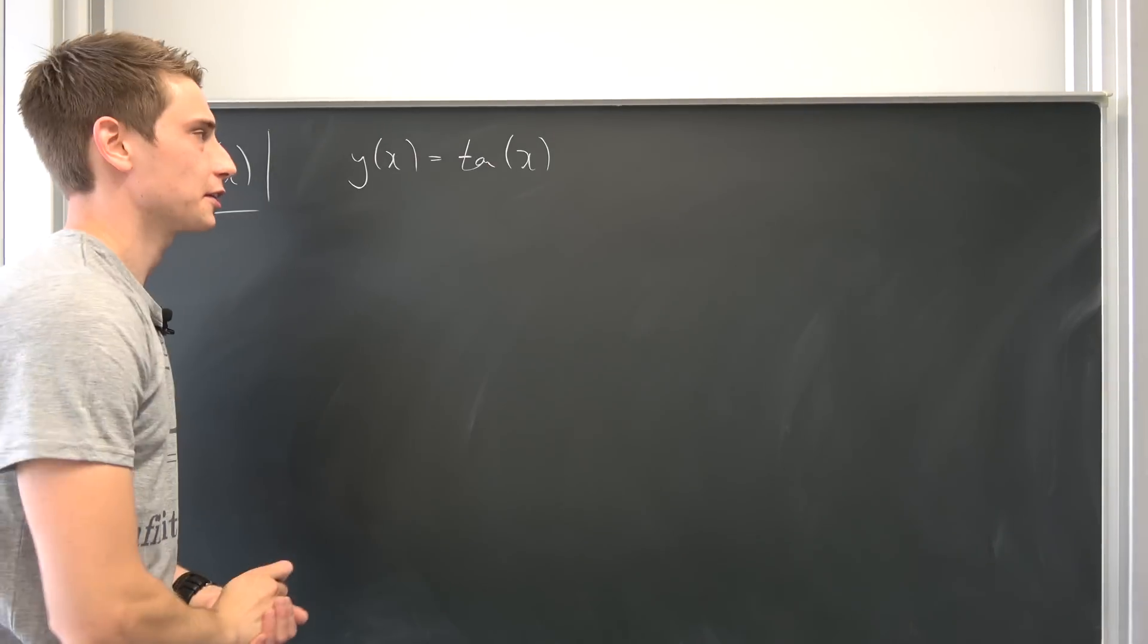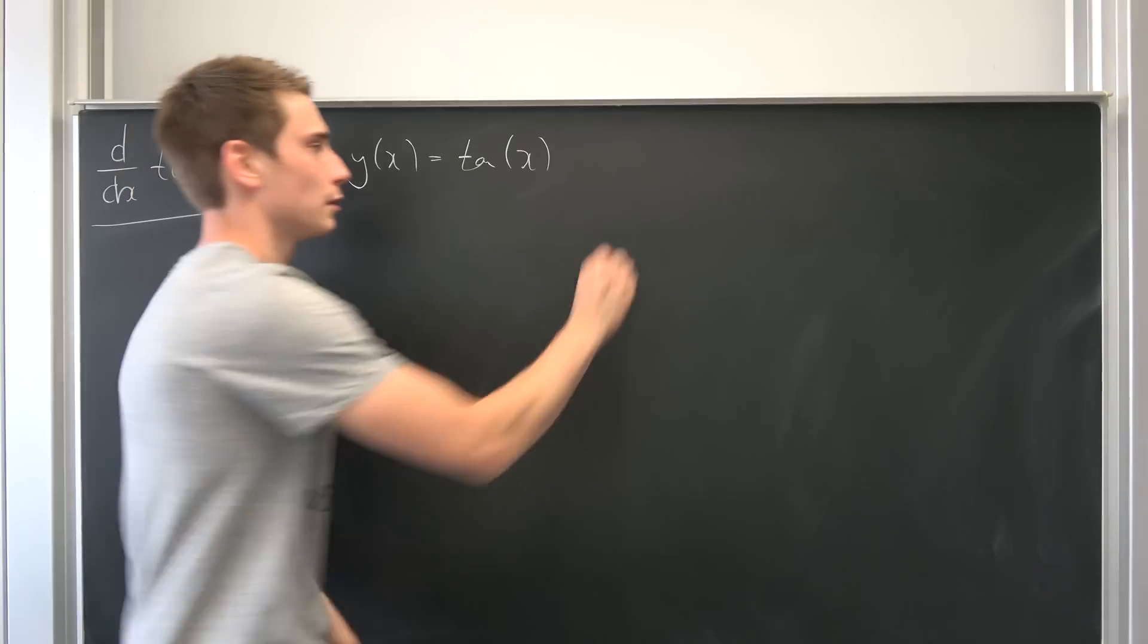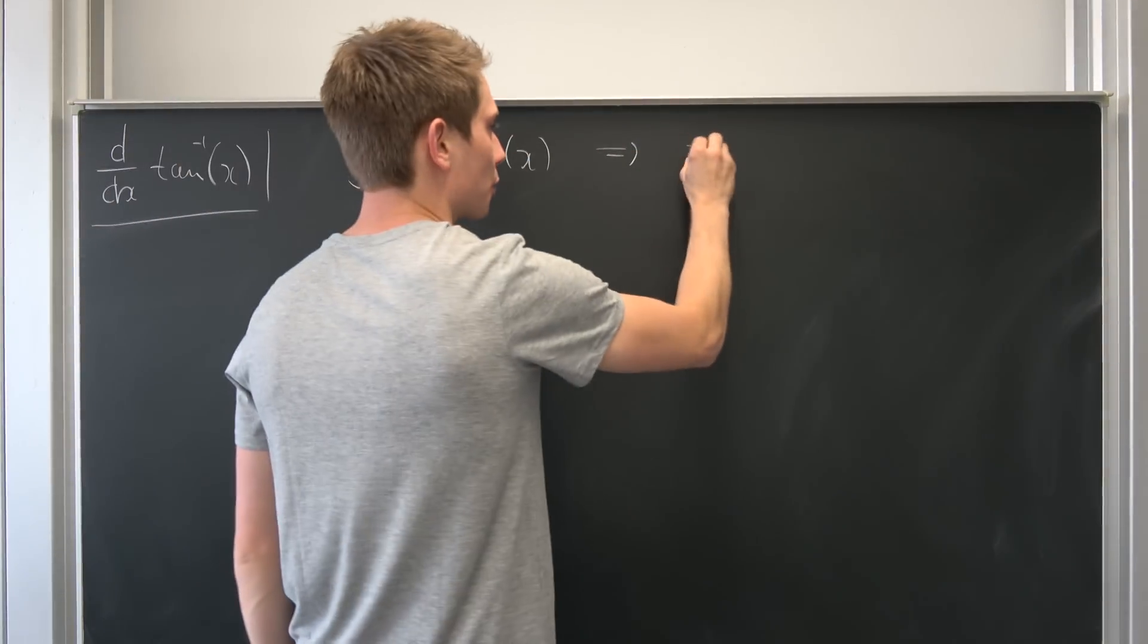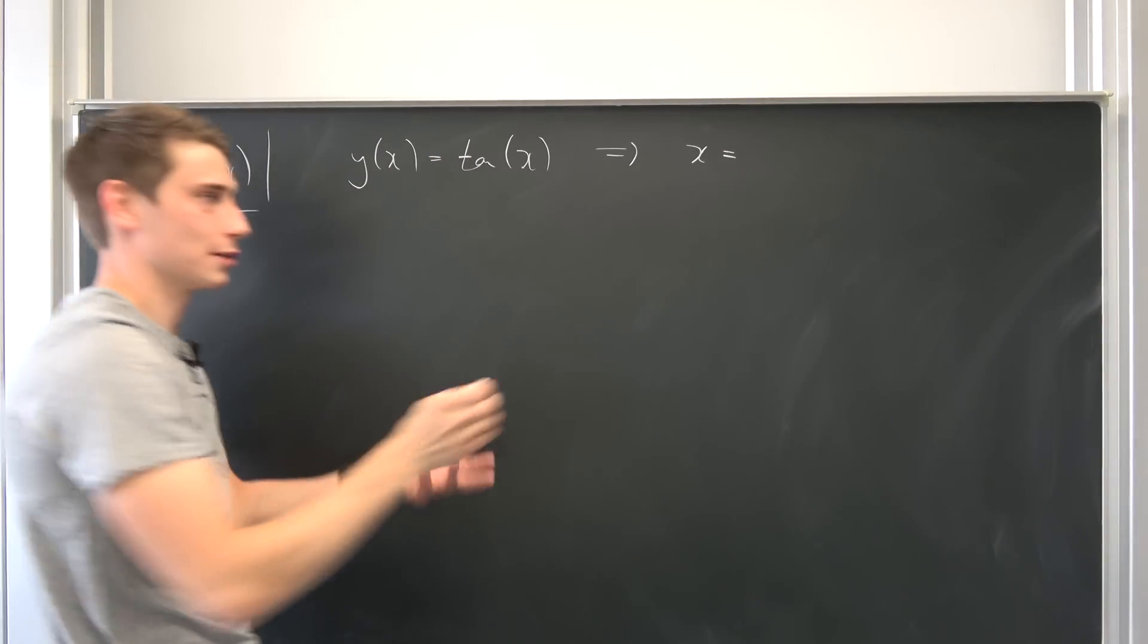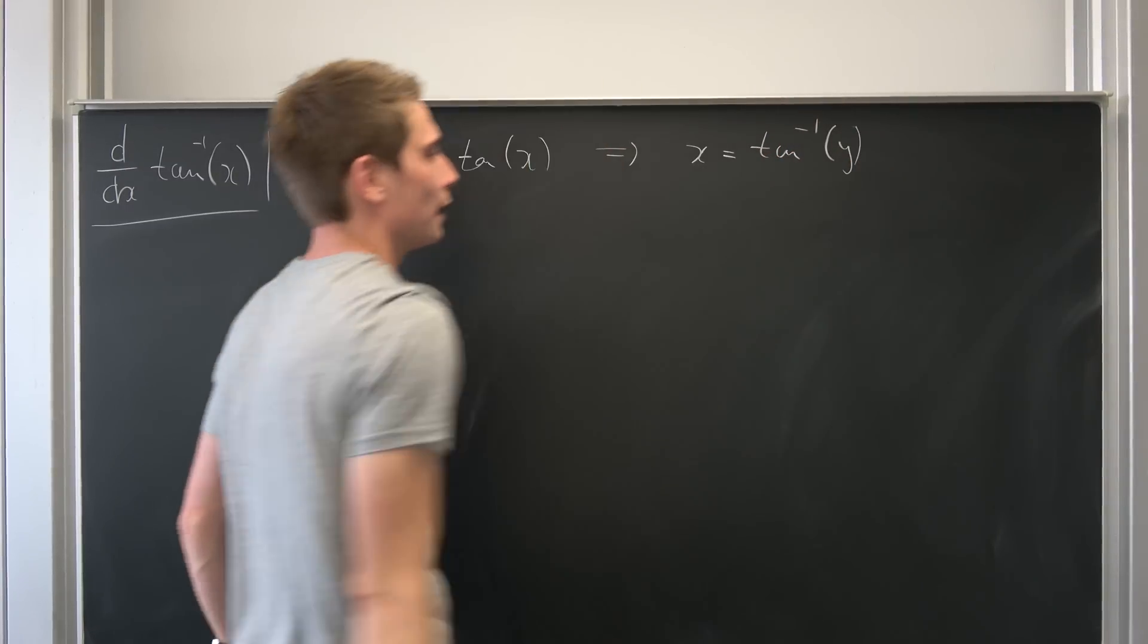We can define it like that. And now we can just use the inverse tangent on both sides because tangent of inverse tangent is just our argument x and the inverse tangent of y is just the inverse tangent of y. So let's put it that way.